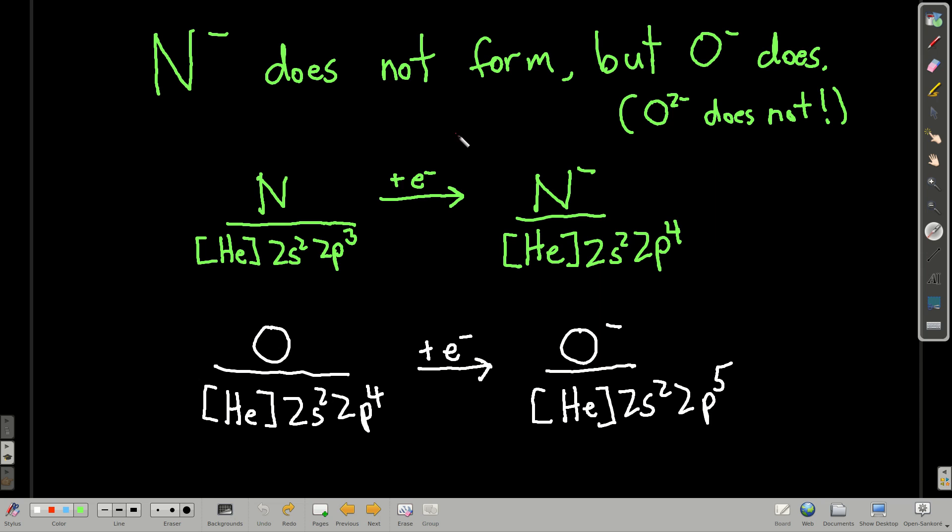Nitrogen has a positive electron affinity. Let's try to explain that. On the other hand, oxygen has a negative electron affinity. So we can say that N minus does not form, but O minus does. If we look at electron configurations, we can use them to explain this. Neutral nitrogen in its ground state has the electron configuration helium 2s² 2p³. Make sure that makes sense to you.